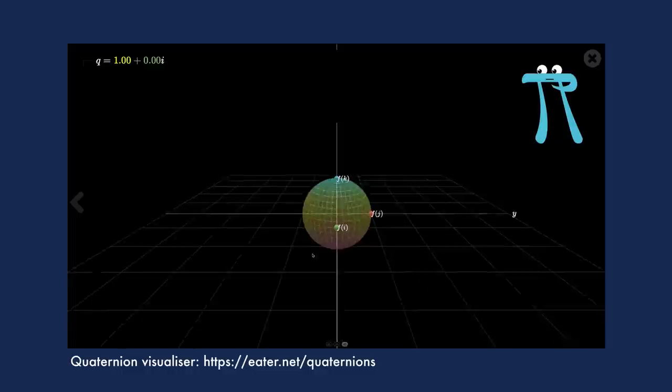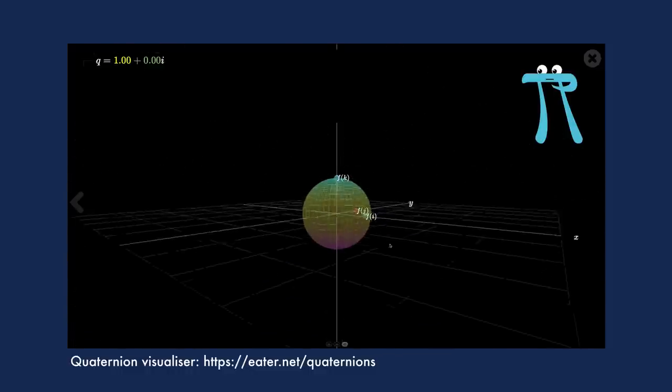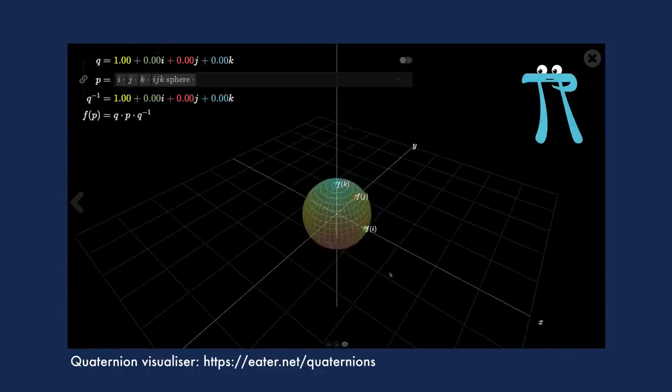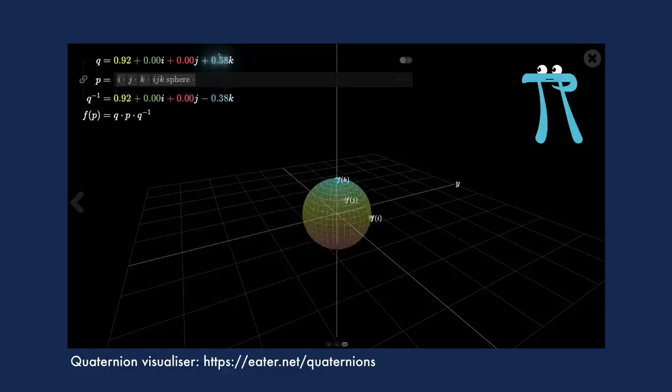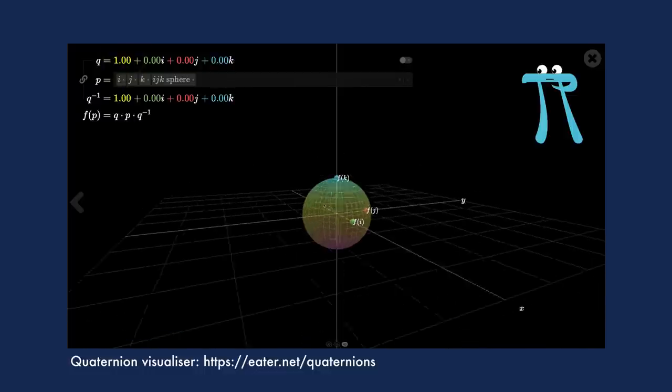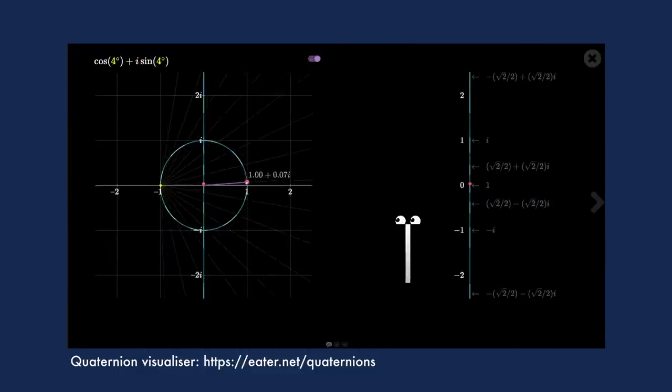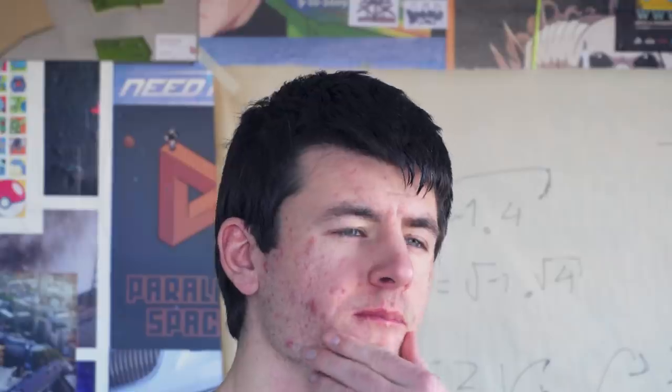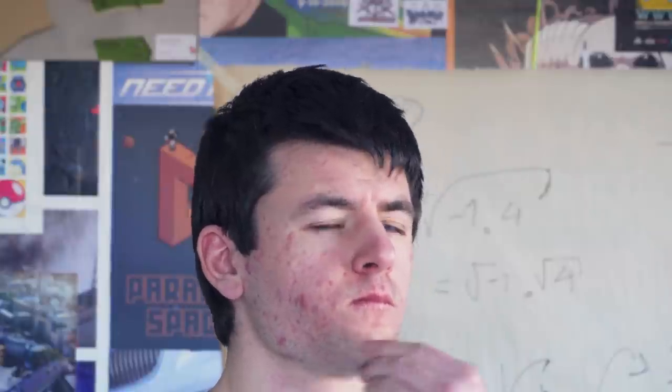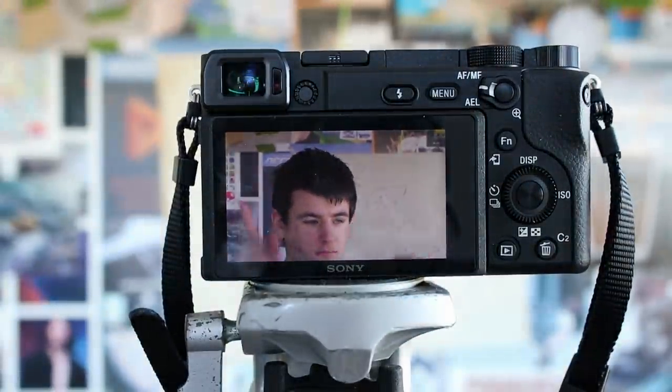Fun fact! Most 3D programs use a similar thing to describe rotations in 3D. Quaternions. A 4D equivalent to complex numbers. No one really knows how they work, but they are much better at describing rotations and don't suffer from the terrifying gimbal lock. So, you could use this as a stepping stone to understanding the mysterious world of quaternions. Hmm, maybe that's something for another video. Speaking of videos, let's get back on track.